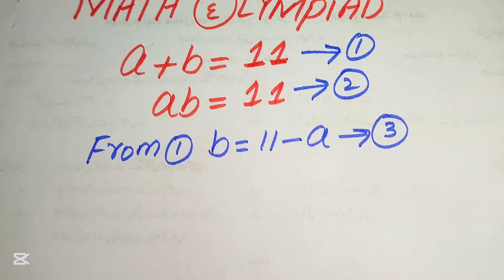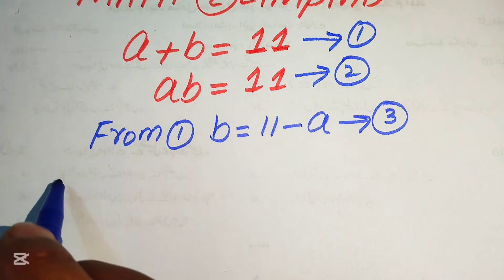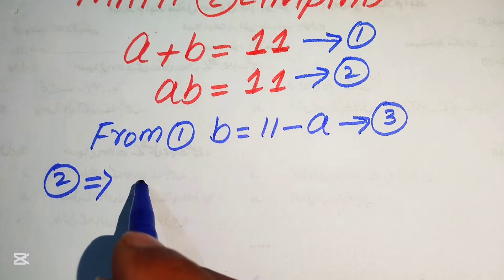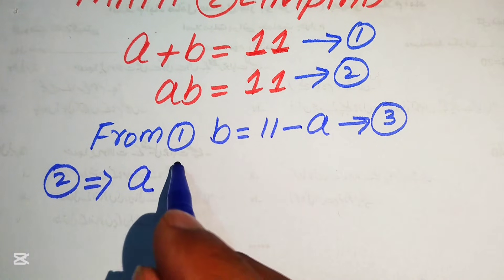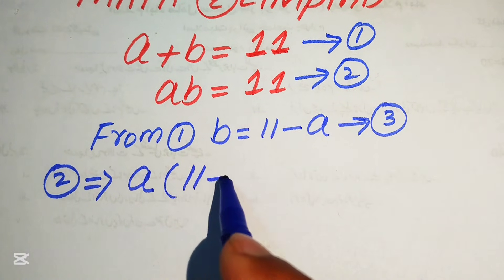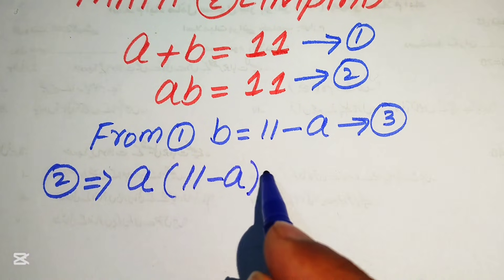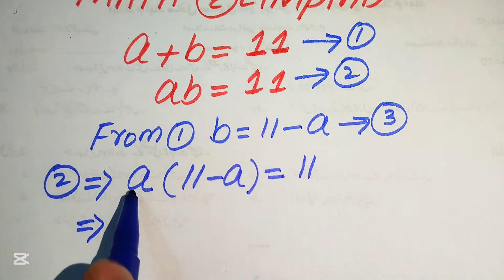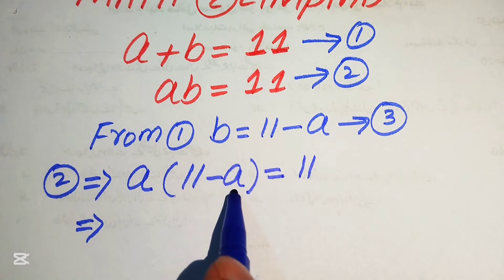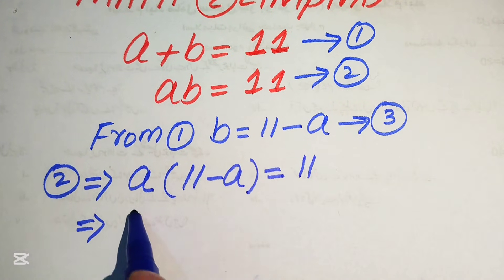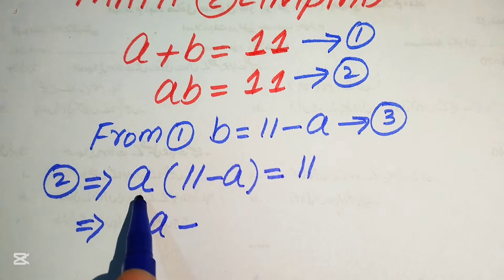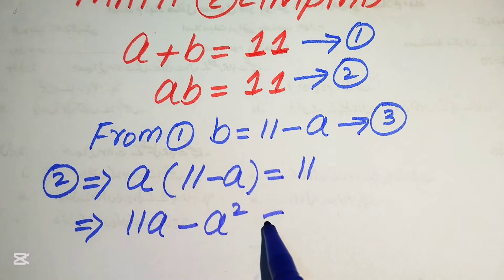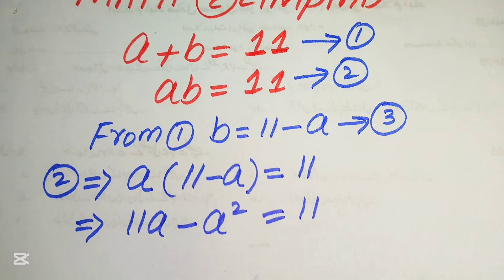So here we need to substitute this value of b in equation number 2. Equation number 2 implies that a times b, and the value of b is 11 minus a, and this equals to 11. In the next step we multiply this a on both terms and it will be written as 11a minus a squared equals to 11.